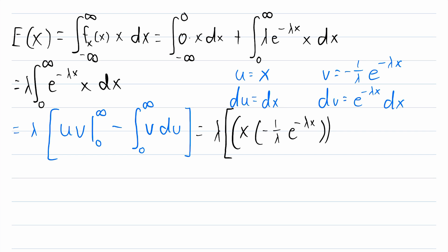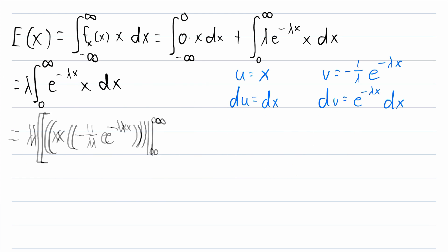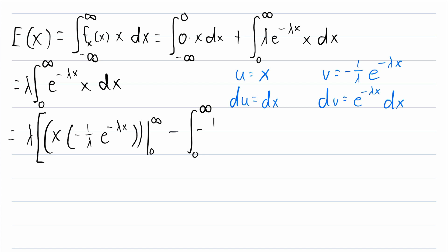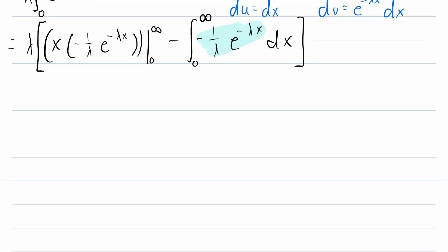Then we subtract the integral from 0 to infinity of v du, which is negative 1 over lambda times e to the negative lambda x dx. Multiplying lambda through both terms cancels out with the 1 over lambda factors, simplifying things considerably. Pulling out the negative sign turns the minus into a plus.